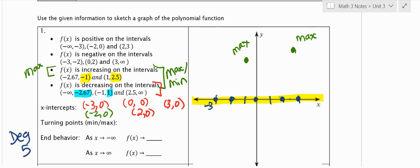I'm going to find now negative 2.67, which is somewhere around here. And I know that there's going to be a low, so maybe I'll make this a min down here. And then we know we're going to have another min at positive 1. And I'll do another min over here.